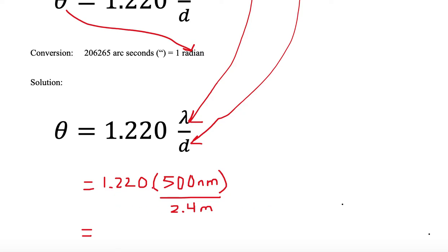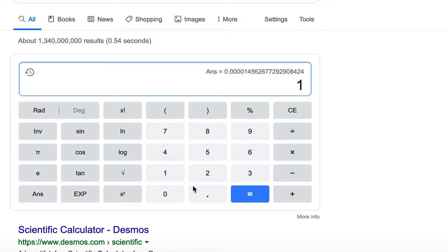You're going to multiply the numbers: 1.220 multiplied by 500 and divide by 2.4. Let's go ahead and do that. So we take 1.220, multiply by 500 and divide by 2.4. And we have a value of 254.17.